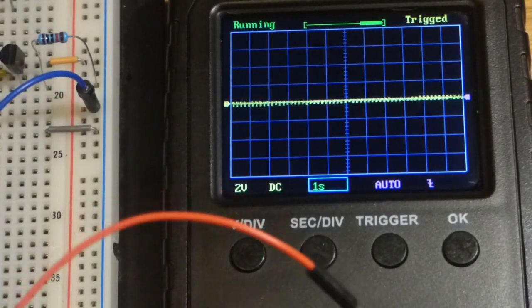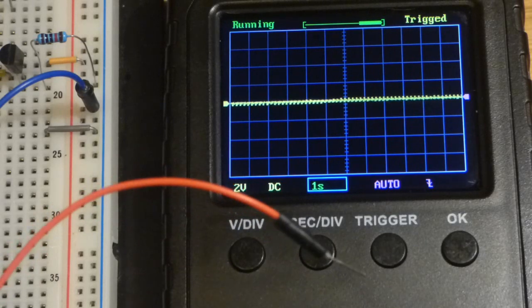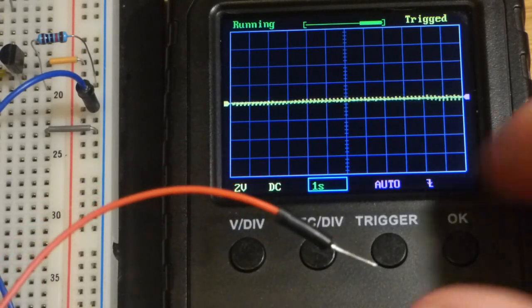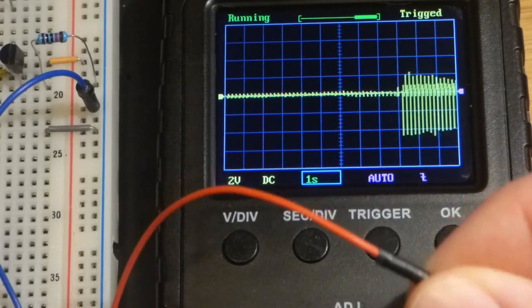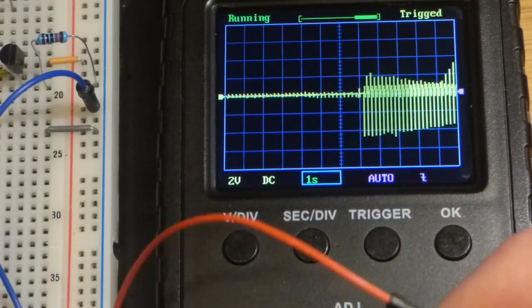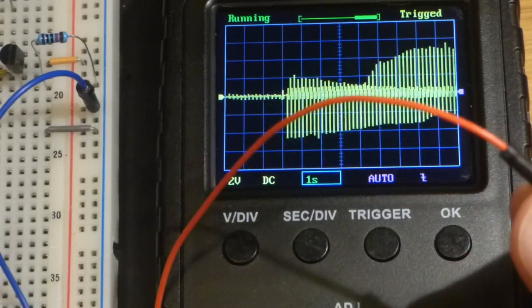So now in this video, I thought it'd be fun to take my new portable oscilloscope and measure the voltage that my body is producing. Actually, I'm absorbing electromagnetic fields from around me, and that is creating a voltage.